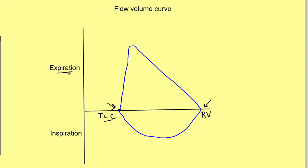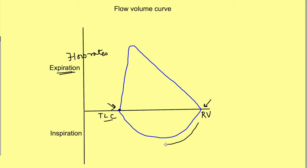This aspect of the curve shows the expiration flow rates. The flow rate is also determined when the person is filling his lungs from residual volume to total lung capacity — that is the inspiration phase — and here again we are determining the flow rates.